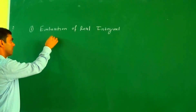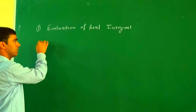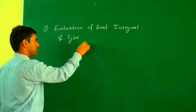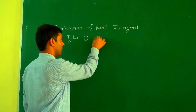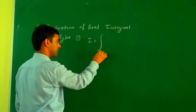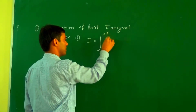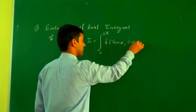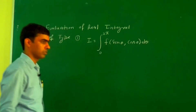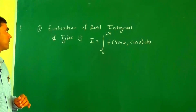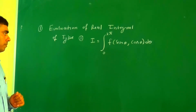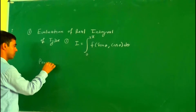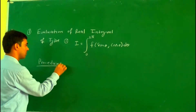Specifically, we look at evaluation of a real integral of type I = ∫₀²π f(sinθ, cosθ) dθ. We try to evaluate this type of integral with the help of residues. Now let's discuss the procedure for how we solve this.